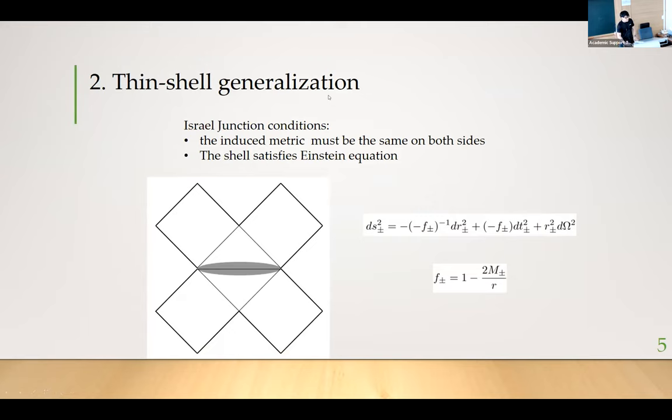How do we generalize this and study the classical picture? One way, the most common way, is to use the thin-shell approximation. Basically, we do a cut and paste procedure. We cut and paste a black hole solution and connect with the white hole solution here. Here is the thin shell and the thin shell has to satisfy the Israel junction conditions. There are two of them. The first one is the induced metric must be the same on both sides. And the second one is the shell and the metric around it has to satisfy Einstein equation.